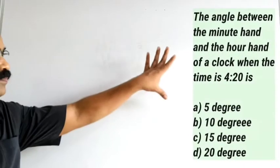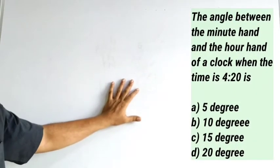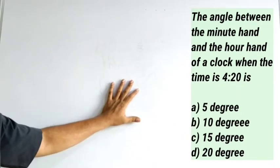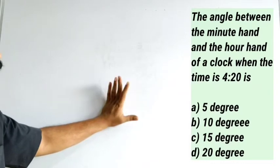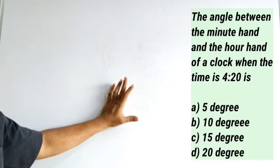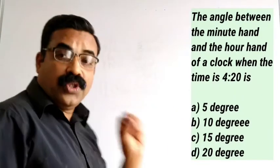Here is your question: the angle between the minute hand and the hour hand of a clock when the time is 4:20. Four options are also given.